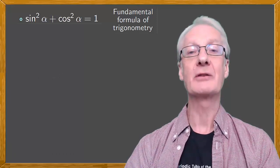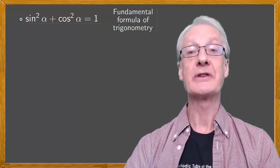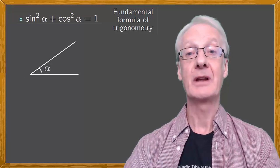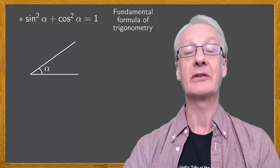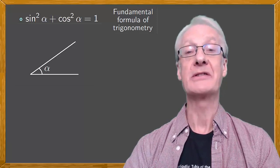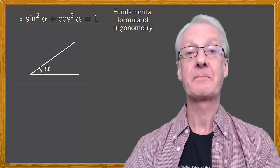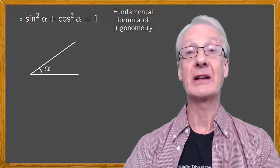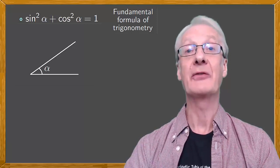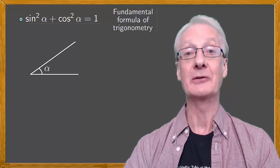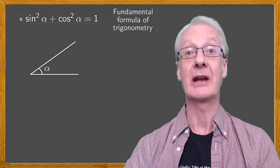Before continuing, notice that we obtain this formula using an angle that is acute. In other words, with a value between 0 degrees and 90 degrees, or in radians between 0 radians and pi over 2 radians. But this formula is also satisfied for other angles that are found in the circle, and in fact is valid generally for any angle. And you can show this as an exercise.